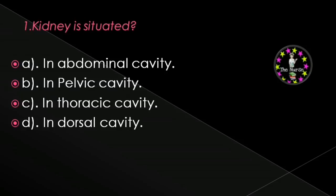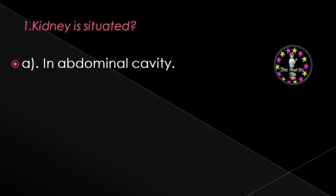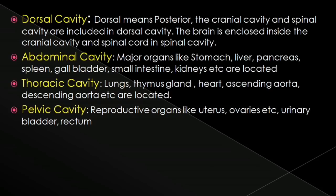First question: Kidney is situated in — abdominal cavity, pelvic cavity, thoracic cavity, or dorsal cavity? Correct answer is abdominal cavity. In dorsal cavity, which means posterior, the cranial cavity and spinal cavity are included. In abdominal cavity, the major organs like stomach, liver, pancreas, spleen, gallbladder, small intestine, and kidneys are located.